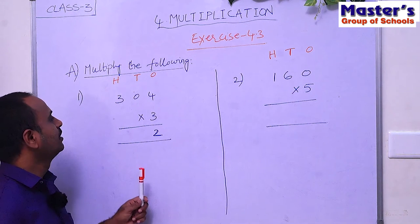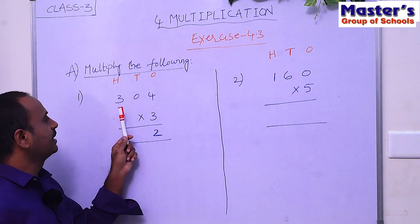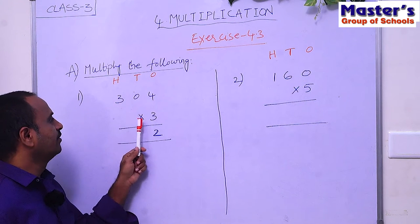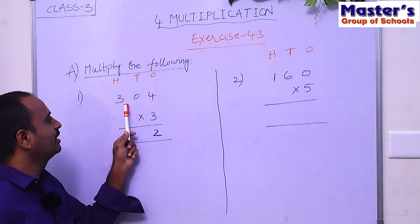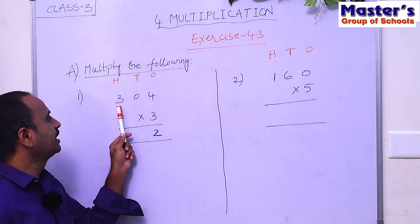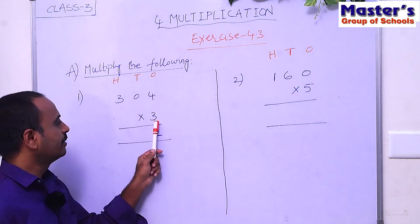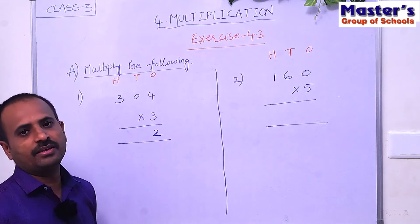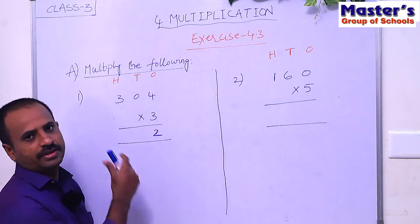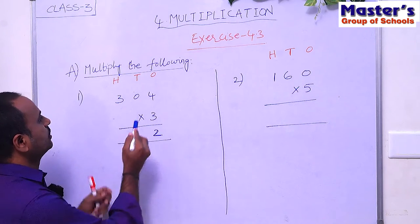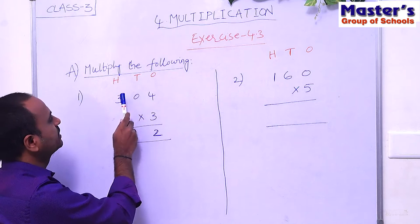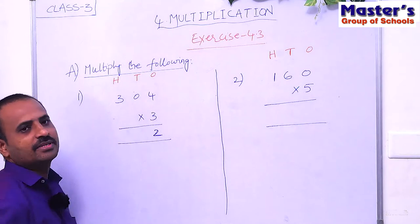Let us see the first problem. The given number is 304, a 3-digit number, and we have to multiply 304 with 3 — a single-digit number. This is multiplication of a 3-digit number by a single-digit number with regrouping. Let us start. We start our multiplication from the ones place: 4 is in ones place, 0 is in tens place, 3 is in hundreds place.